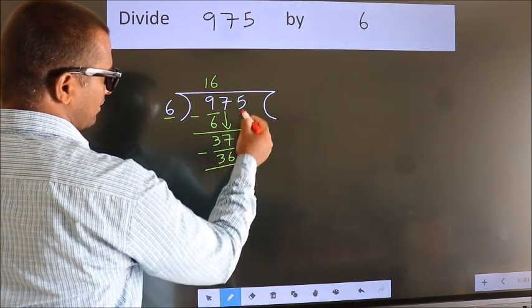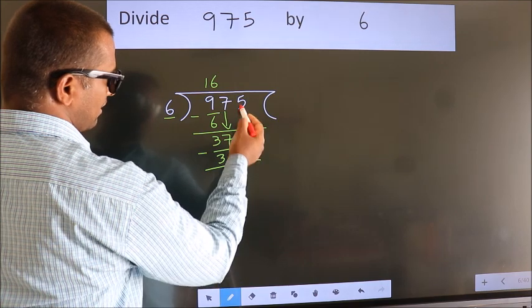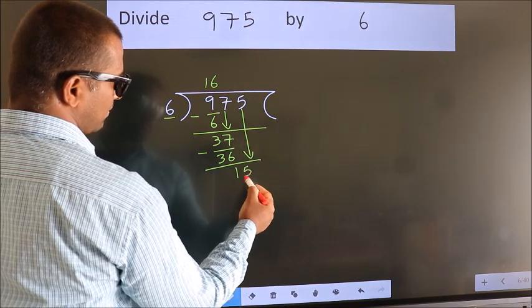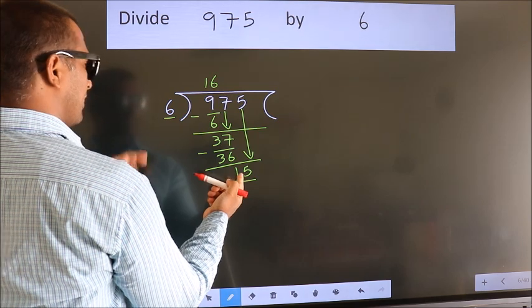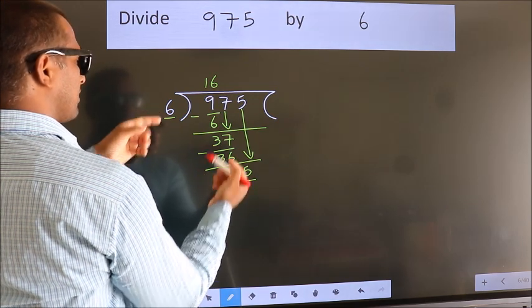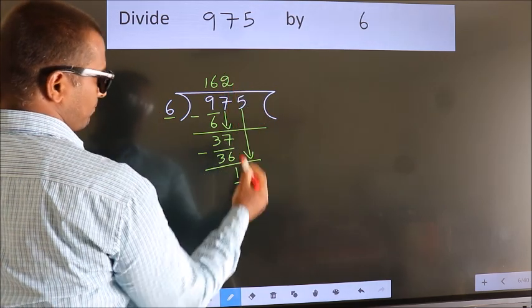After this, bring down the beside number. So 5 down. So 15. A number close to 15 in 6 table is 6 2s 12.